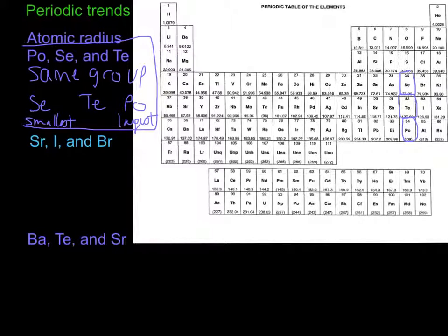Let's find everything first. Here's strontium, here's iodine, and bromine. Now look at that relationship. We have strontium and iodine in the same period. What do we know about the size going across a period? The effect of nuclear charge increases as we go across a period, so that means strontium must be larger than iodine. Now let's look at bromine and iodine, which are right together. Bromine and iodine are in the same group, so as we go down a group, the atomic radius is increasing — meaning bromine must be smaller than iodine.